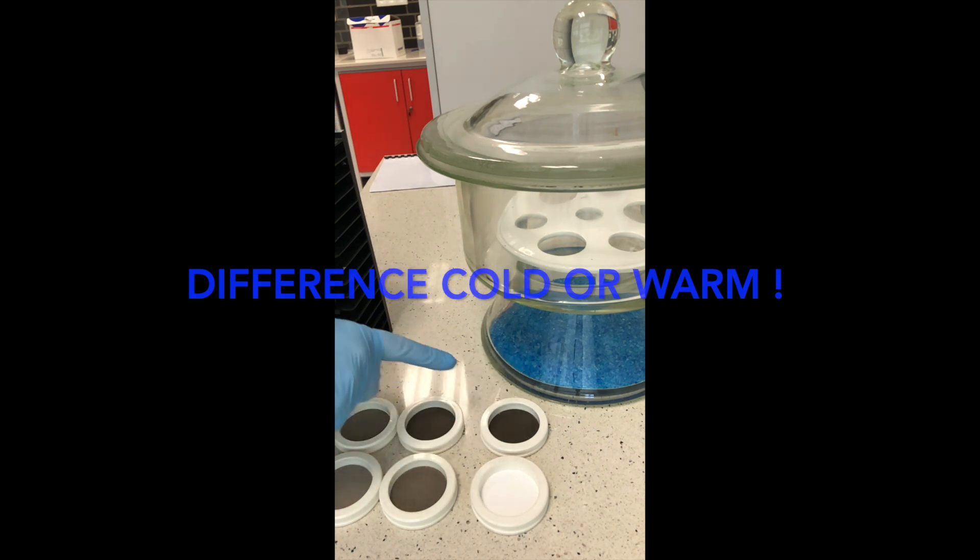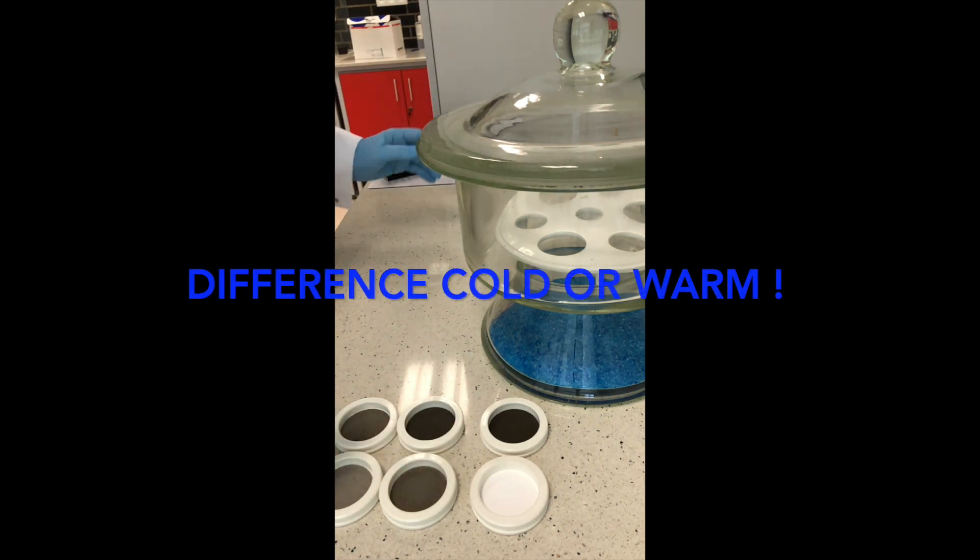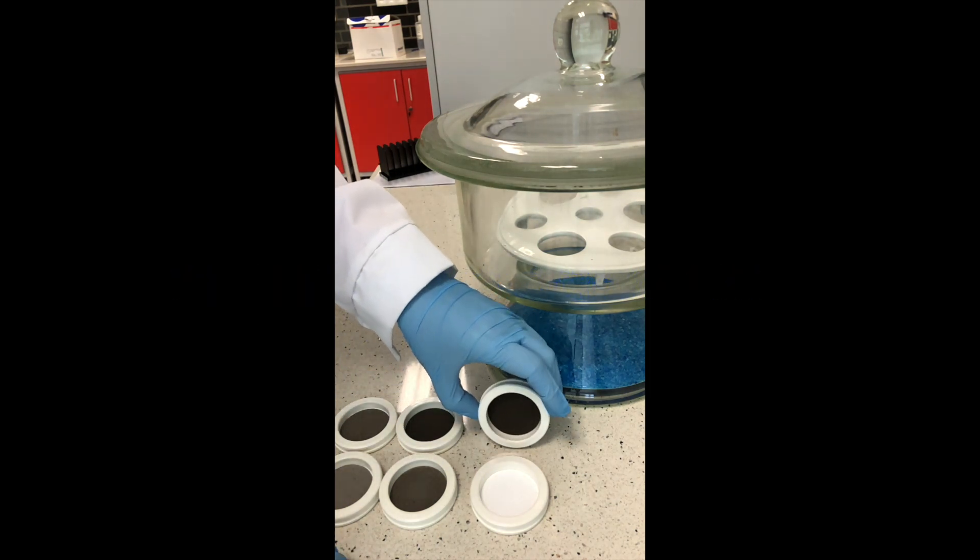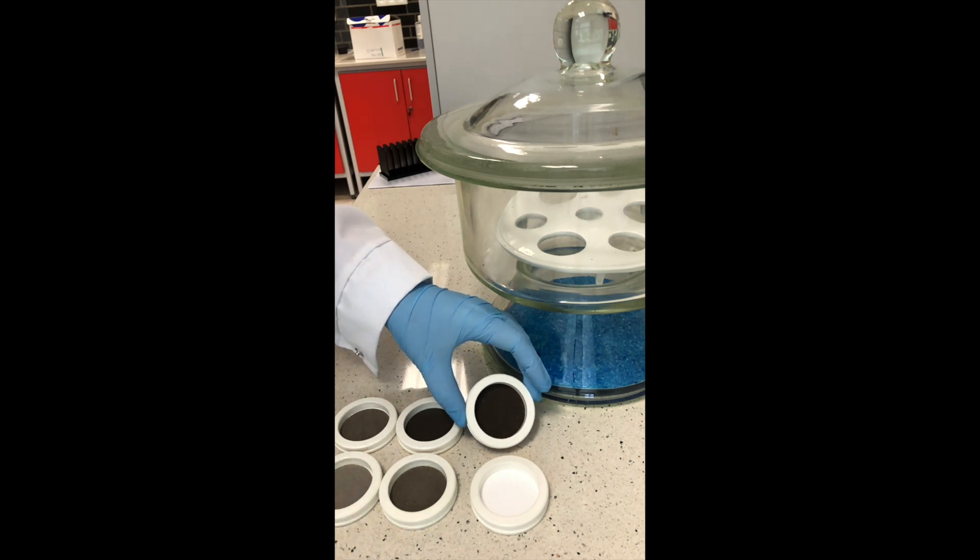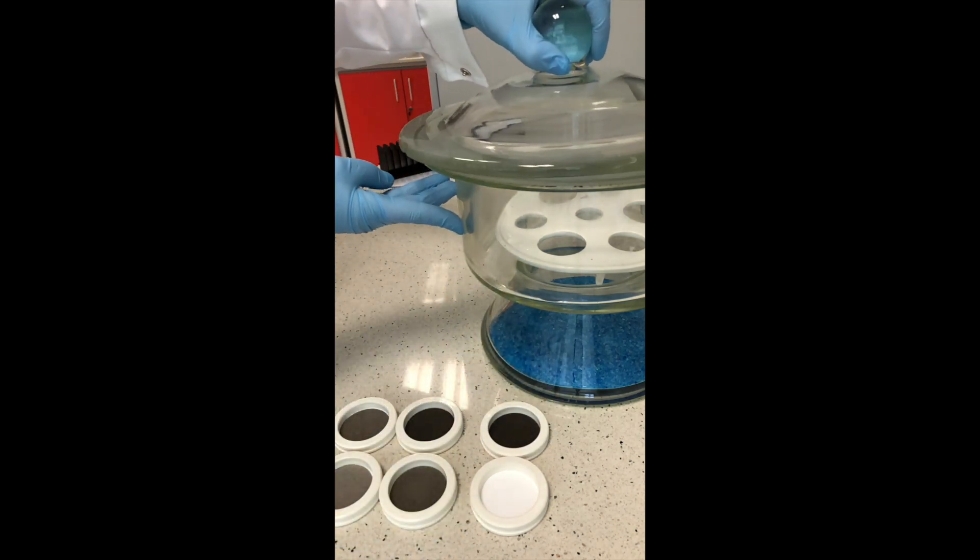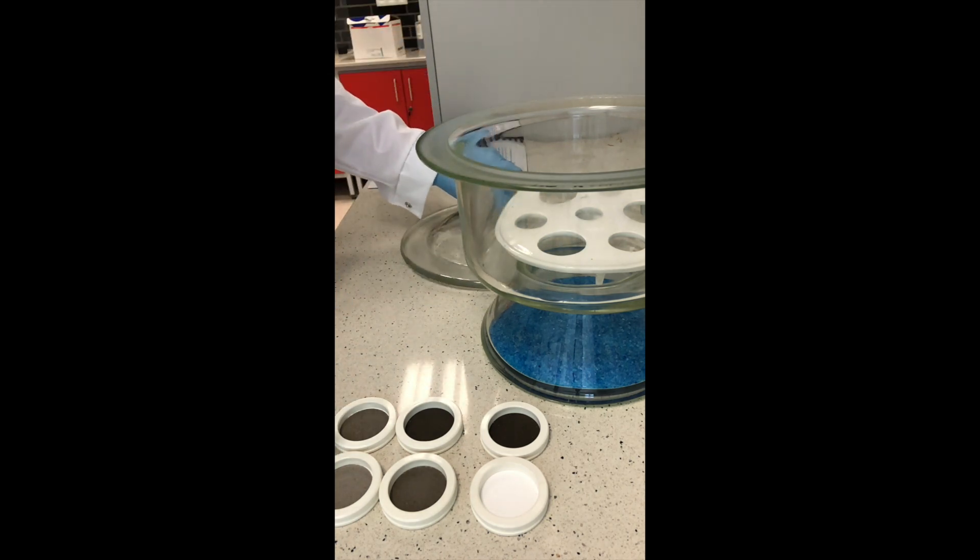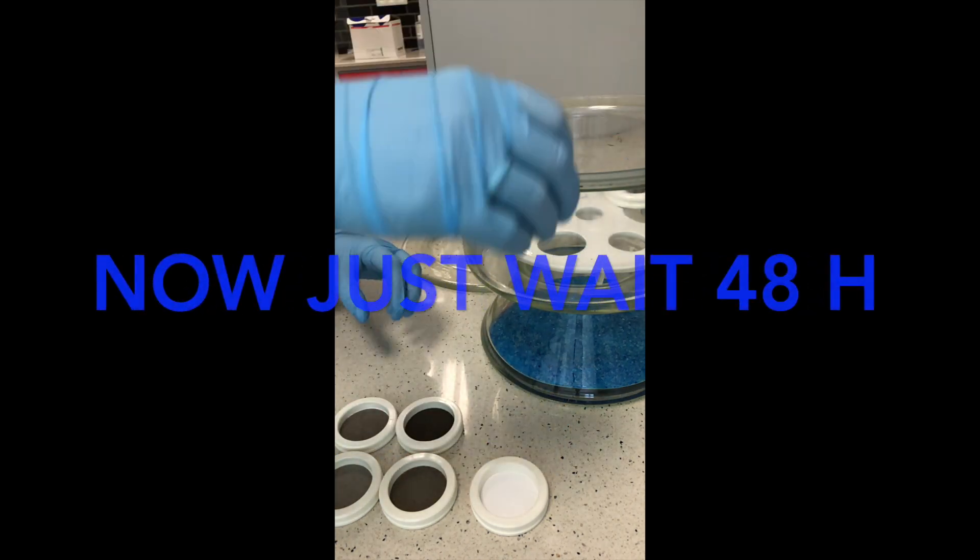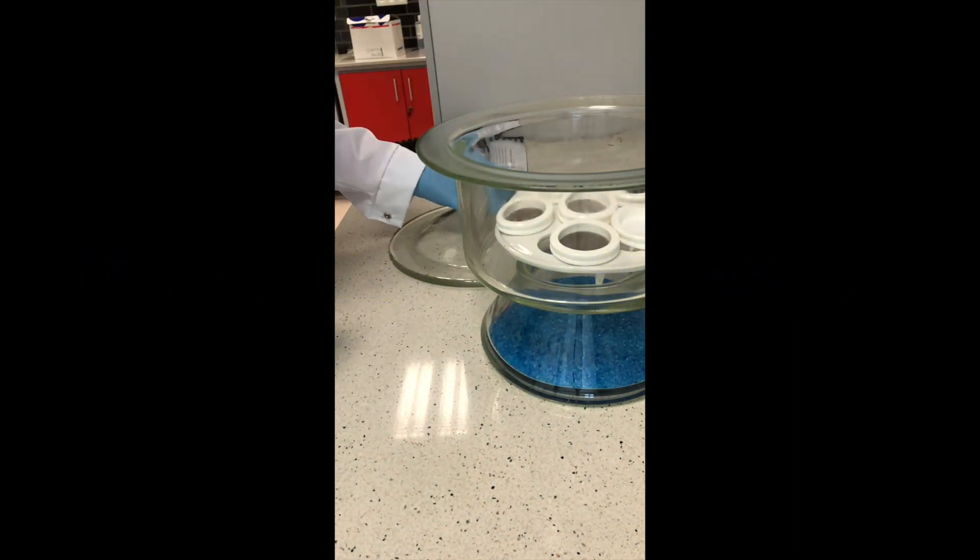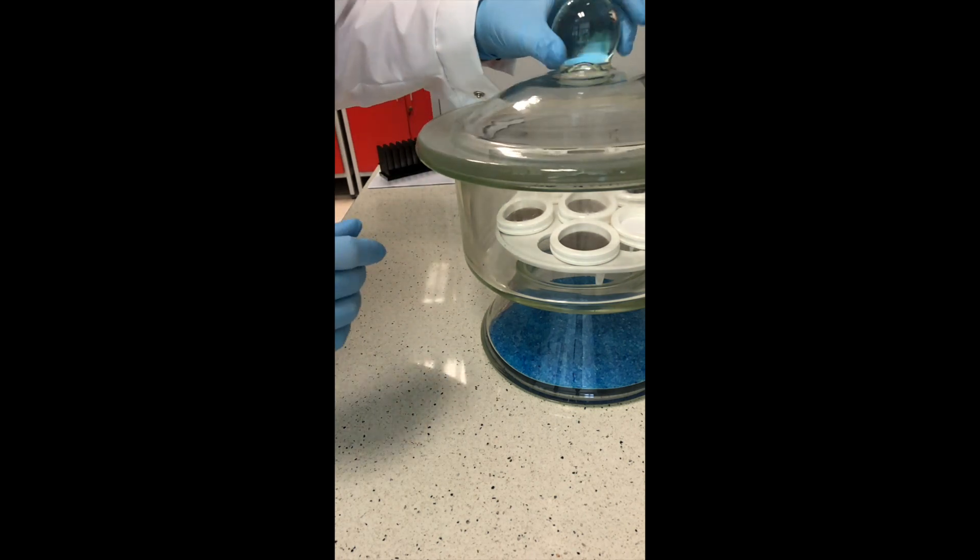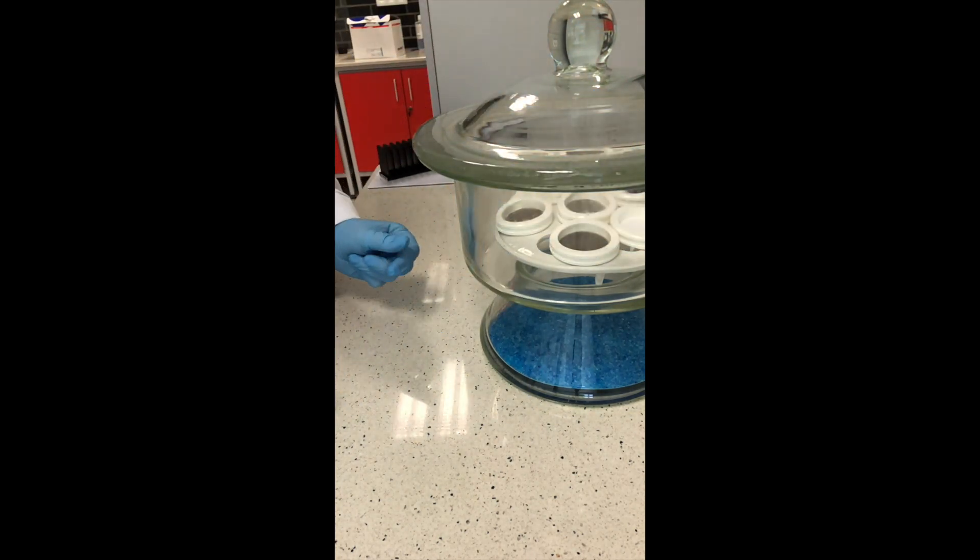When you look at the filters you even see the difference if there was a colder day or a warmer day. On the colder day the filter is darker. It is connected with soot, so unburned coal which is in the flue gases. What you have to do is put the filters in the exsiccator and wait 48 hours. After 48 hours, after they are conditioned, you can weigh the filter on the balance.